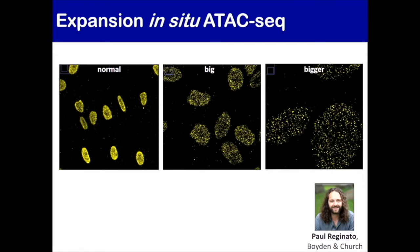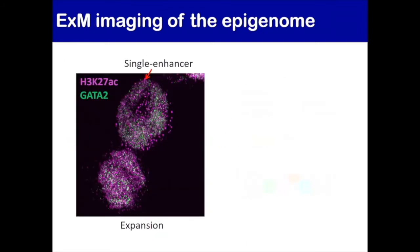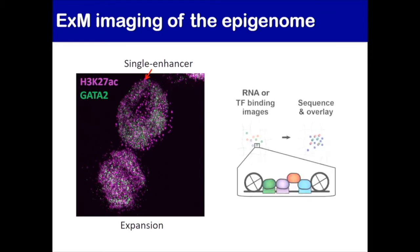The other thing we're interested in is integrating across layers. Expansion physically separates otherwise crowded molecules in a cell to resolve them as individuals. By simple immunostaining and high-quality imaging, you can start to see individual enhancers marked by H3K27 acetylation after expansion, as well as individual instances of transcription factors like ATF2. The dream is to do RNA measurements inside the cells, or TF binding images using serial immunofluorescence or multi-color approaches, overlaid with in situ sequencing to get something like spatial single-cell ChIP-seq.